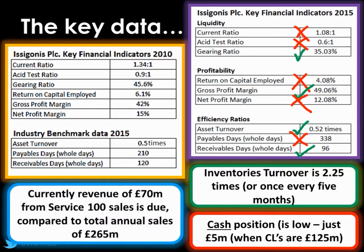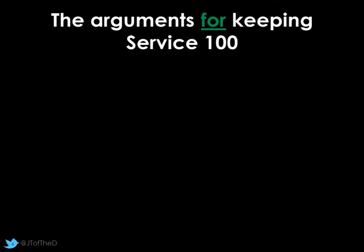We're currently owed £70 million from our customers — quite significant in the scope of total annual revenue of £265 million. Considering it takes customers under 100 days to pay us, that £70 million is very significant in making up our sales. The system does seem to work — people are buying into it. We need to look at arguments for and against and come up with an evaluation, remembering it's very important to have that balance.